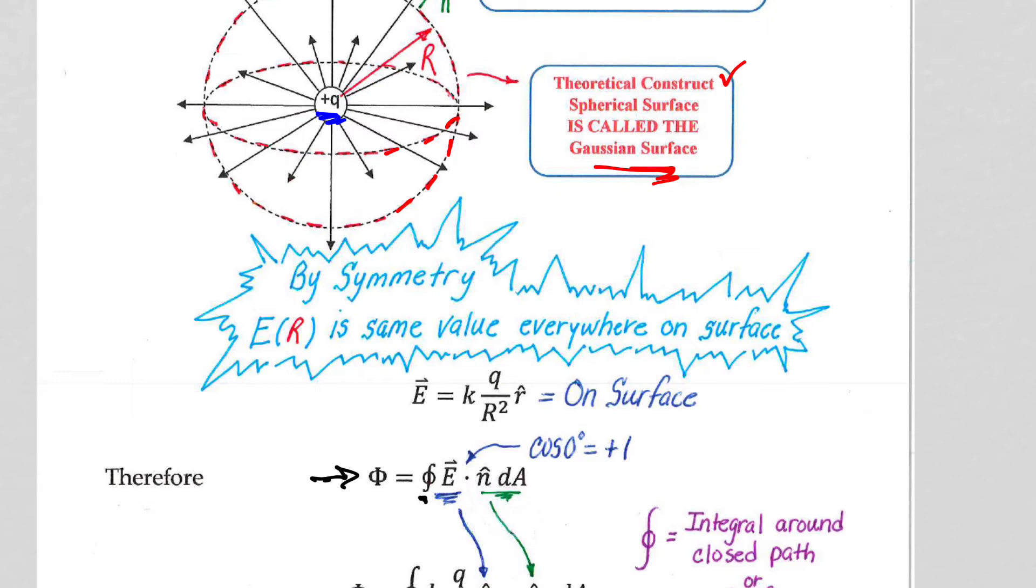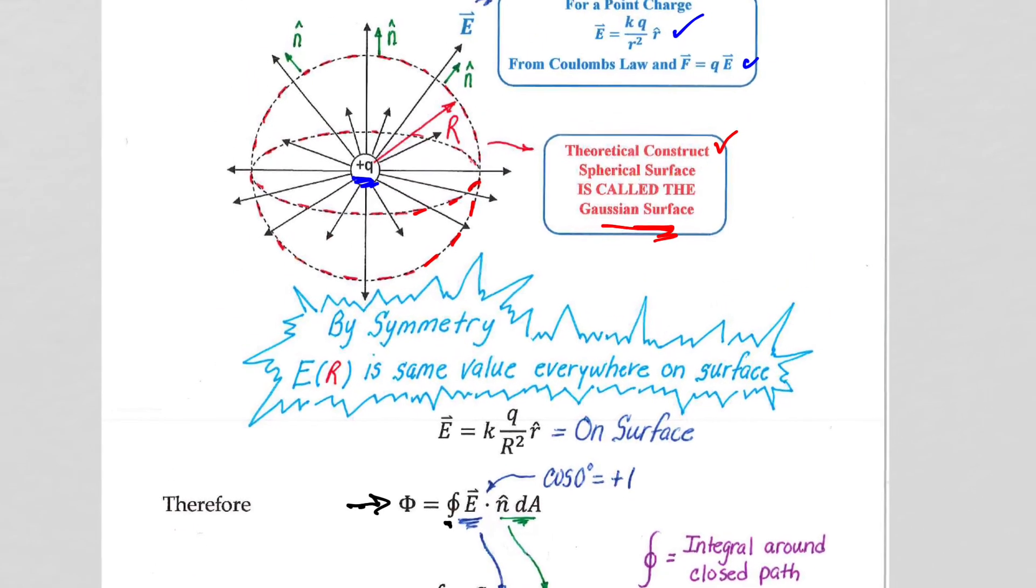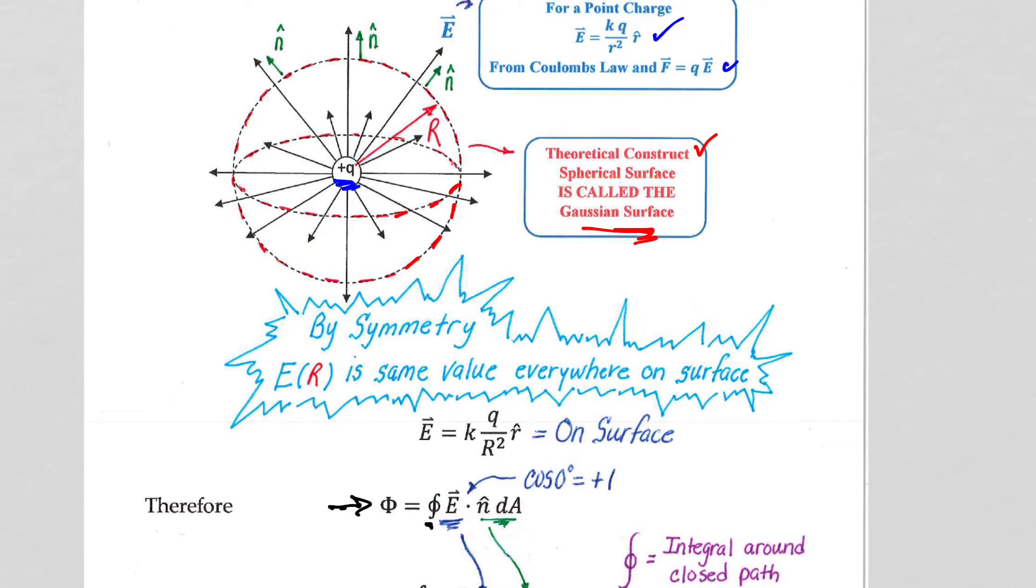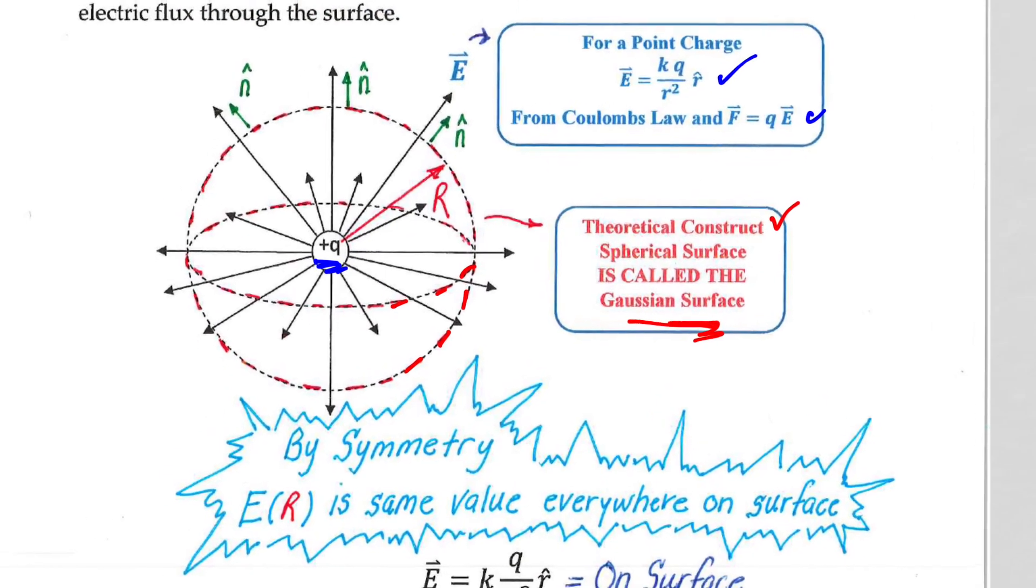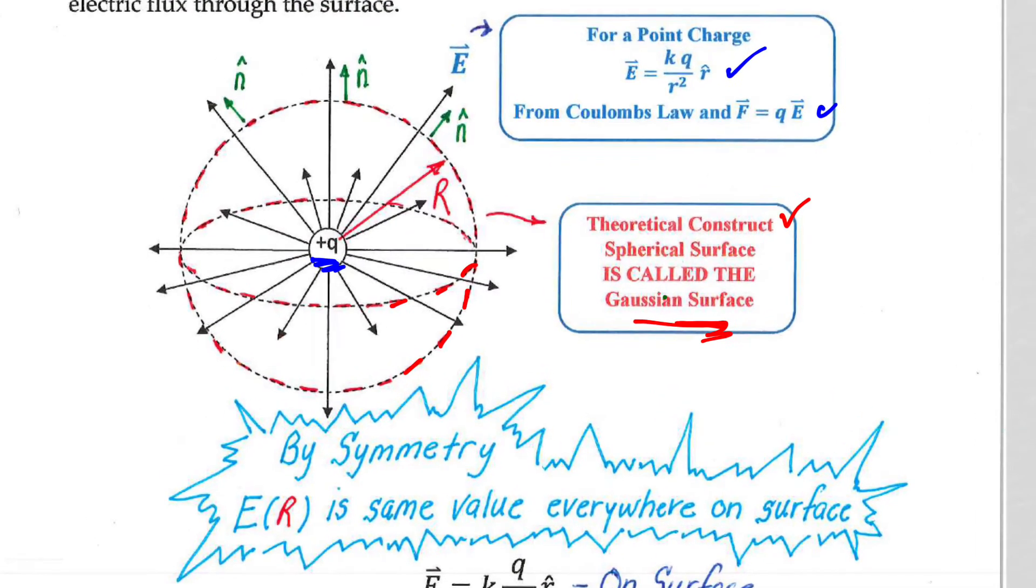But dot product is magnitude of the first, magnitude of the second, cosine of the angle between the two. That's why the n hat vectors, as I said, are so important to kind of start your analysis with conceptually to make sure that you can take the dot product of that n hat vector, which is perpendicular to the surface, and the E vector that is shown here.